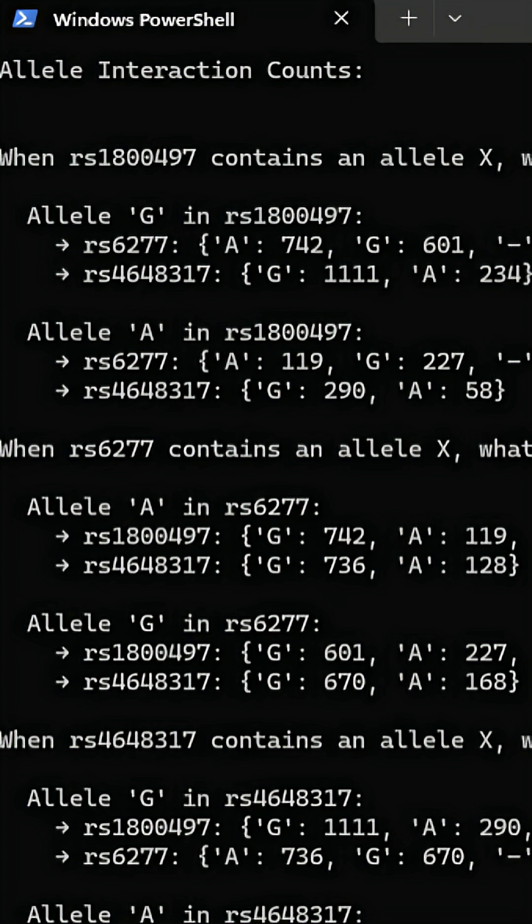Let's start with RS-1800497. This SNP has two common alleles, A and G. In our dataset, when the A allele is present at RS-1800497, it co-occurs strongly with the G allele at RS-6277. That's tight linkage.